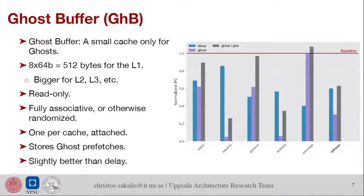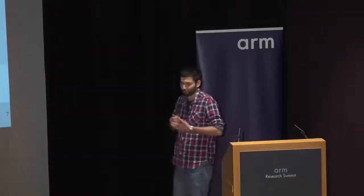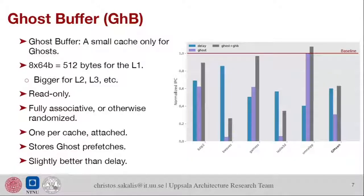We have to take extra care that we not enable any attacks on that cache also, so we have to make it fully associative, maybe if possible randomize the accesses and a lot of other stuff which I don't have time to talk about. We have one of these small caches for every normal cache. There you store ghost accesses, speculative loads, and also any prefetching triggered by speculative loads in that cache. The results are kind of better than delay, but still 40% performance loss is not exactly great.